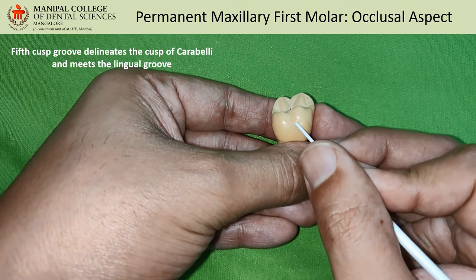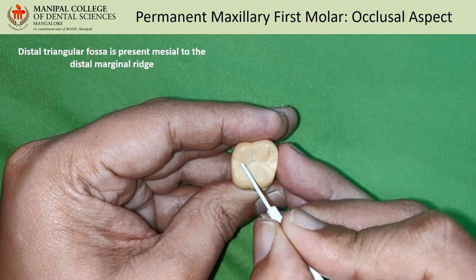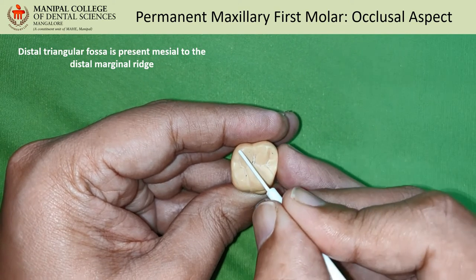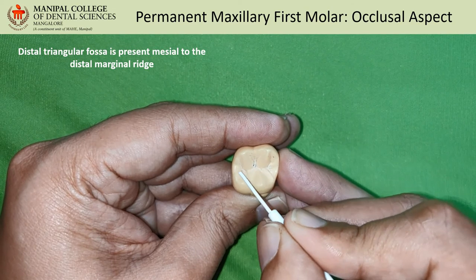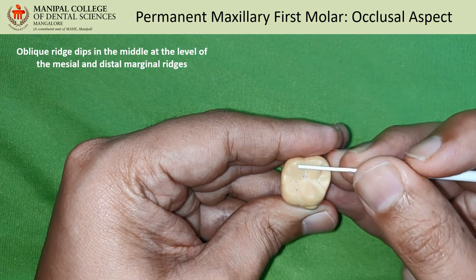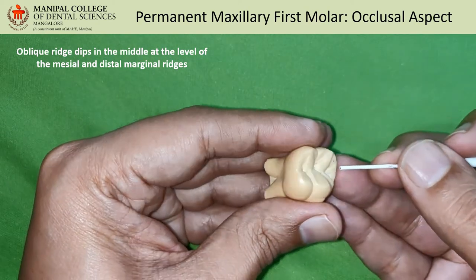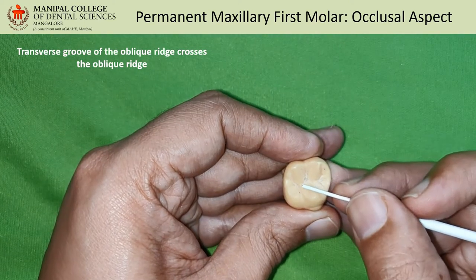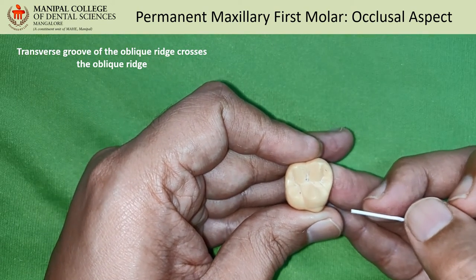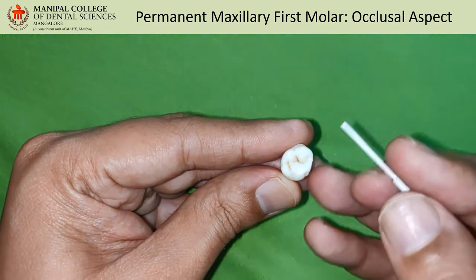If the fifth cusp is prominent, you will also see the fifth cusp groove, which ends at the termination of the lingual groove. From the distal oblique groove, radiating secondary grooves form a small triangular fossa along with the distal marginal ridge — this is the distal triangular fossa. The oblique ridge dips slightly at its center, in line with the mesial and distal marginal ridges. The groove that crosses the oblique ridge at this depression from the central pit is called the transverse groove of the oblique ridge.